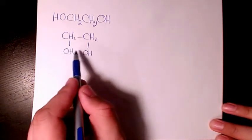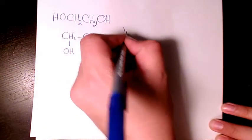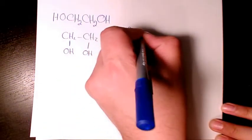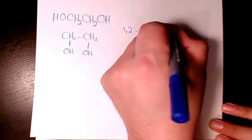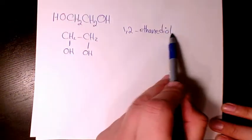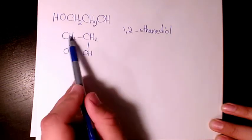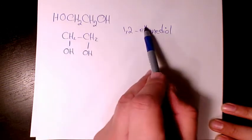So, we can call it 1 and 2 ethane-diol. Because we have two alcohols and here we have ethane. 1 and 2 ethane-diol.